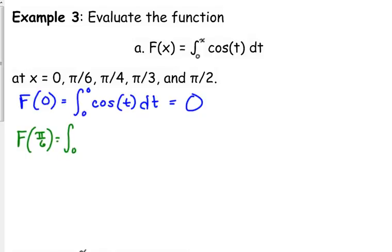Let's look at pi over six. That's the integral from zero to pi over six of the cosine of t dt. We need to take the antiderivative of that. What is the antiderivative of cosine?